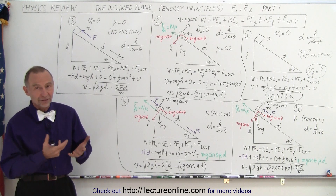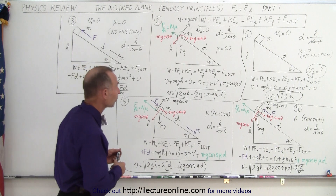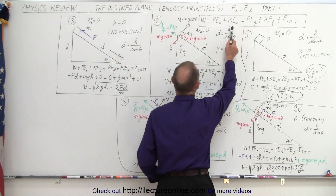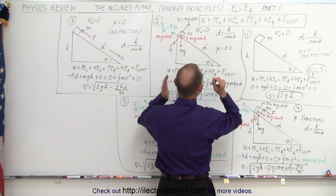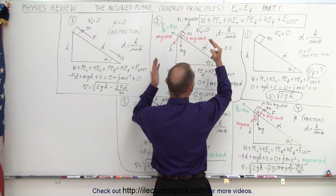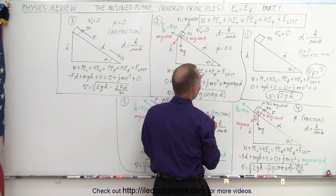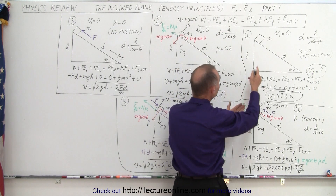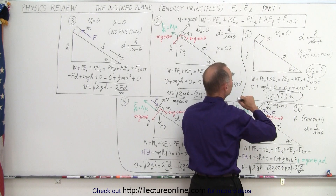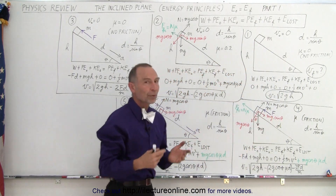Any retarding forces that may exist take energy out of the system. We use the general principle that the initial energy equals the final energy. The initial energy consists of any work put into the system, plus any potential energy it initially had, plus any kinetic energy it initially had, and we set that equal to the final potential energy, the final kinetic energy, and any energy lost during the process.